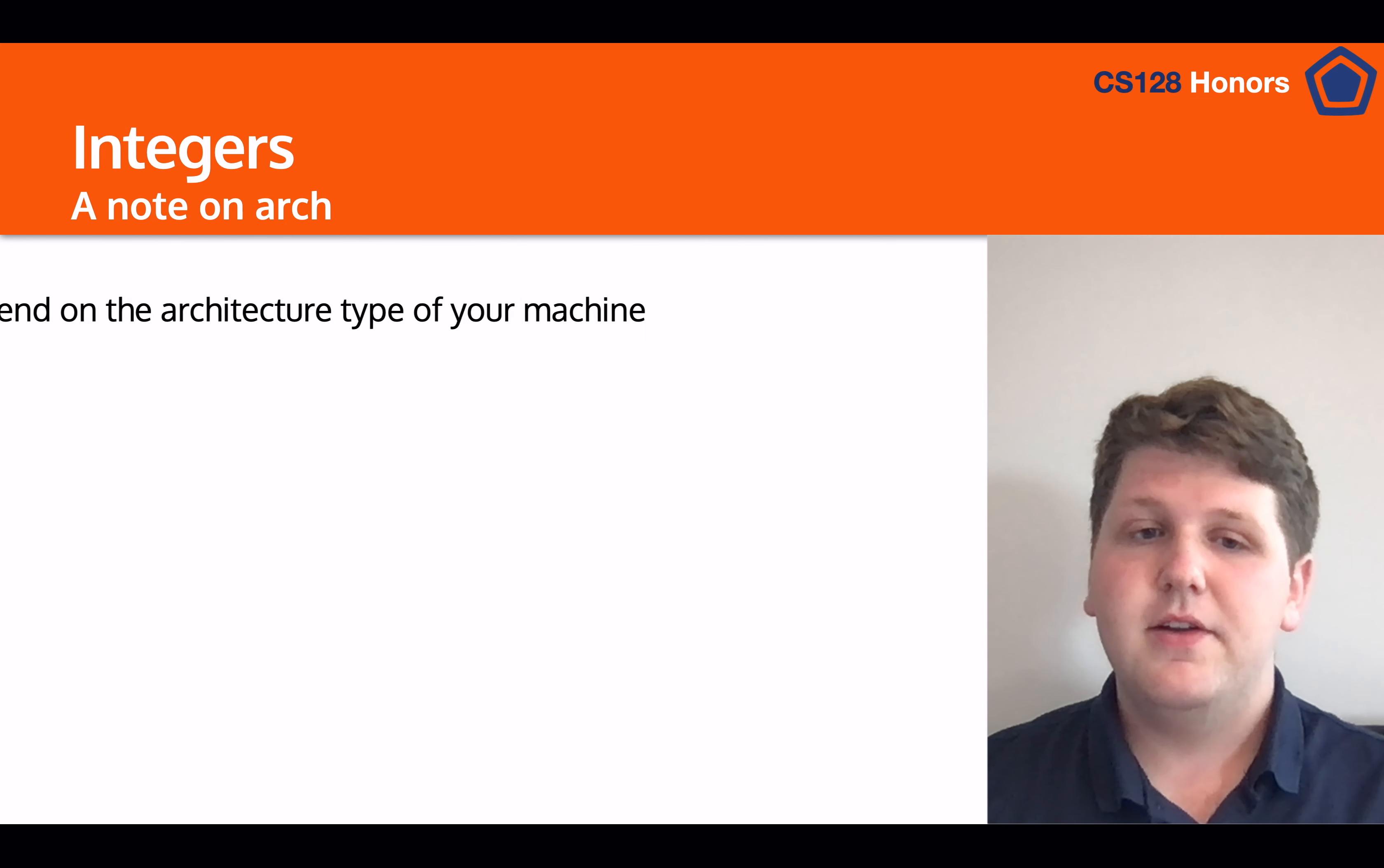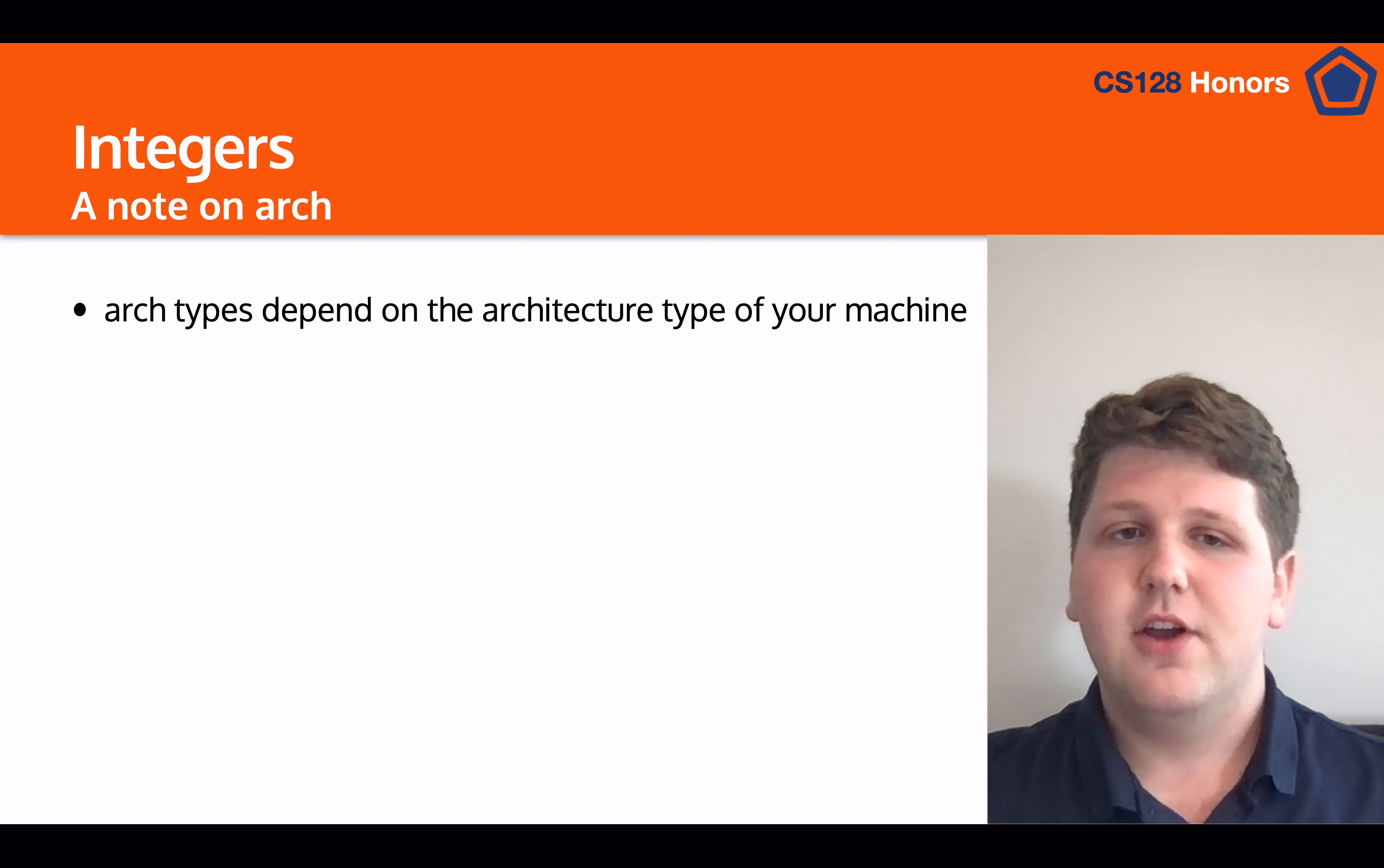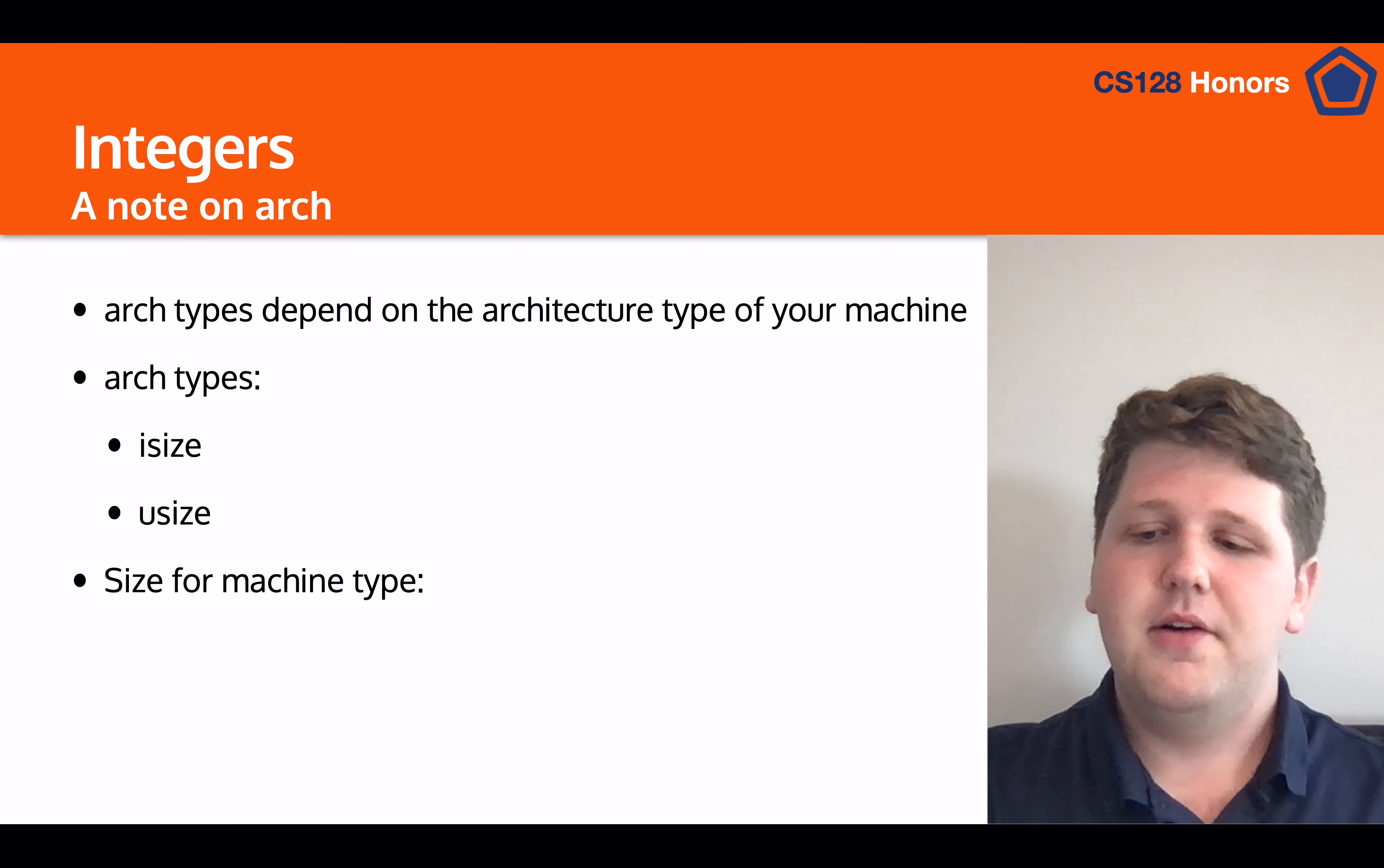So we have one final thing to talk about with Rust integers, and that is the ArchType. The ArchType is a type that depends on the architecture type of your machine. So there are two types. There are iSizes and uSizes, and as you can imagine, that is either a signed integer or an unsigned integer of a size based on your machine.